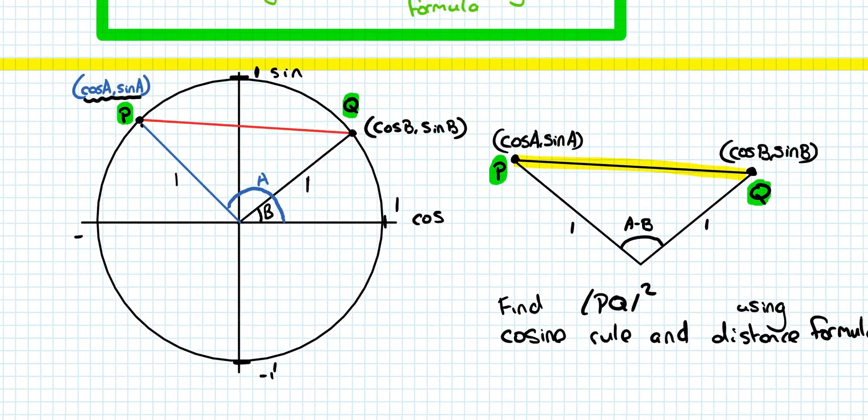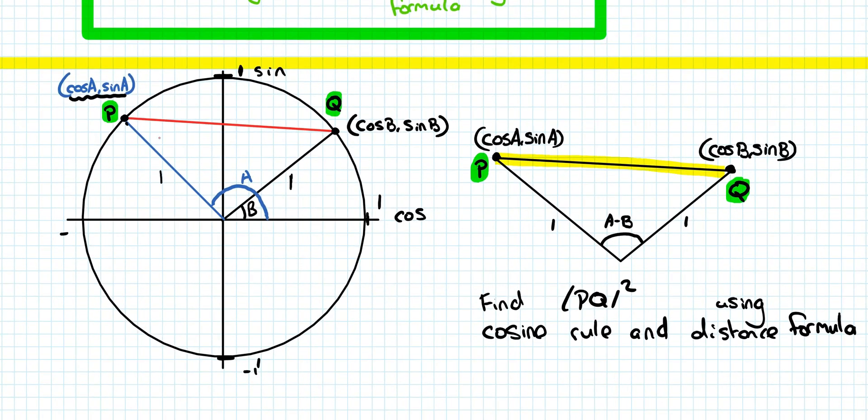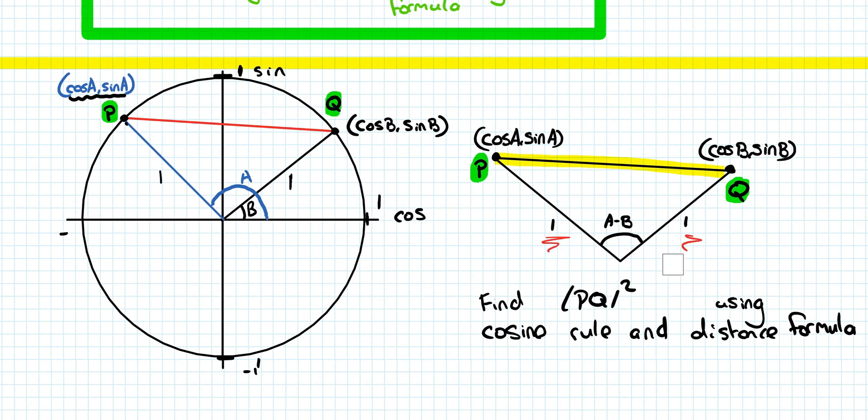So, as always, we need a really good diagram. So with our unit circle, we have our angle a, really useful to put it in the second quadrant, that makes it look really nice. And our angle b here, radius 1, radius 1, important to note those two in, because now we know, when we look at it in the triangle over here on the right-hand side, we know two lengths of the triangle. Really useful.